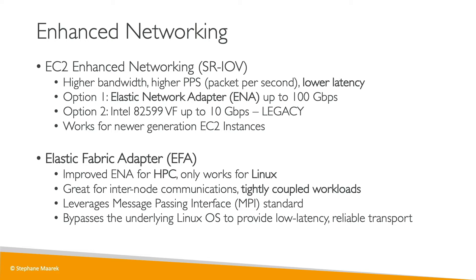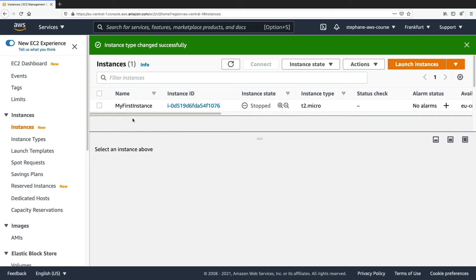The bottom line is: if you just want enhanced networking for lower latency, look for ENA — the Elastic Network Adapter. If you have an HPC cluster, look for the EFA on top of it to improve performance.